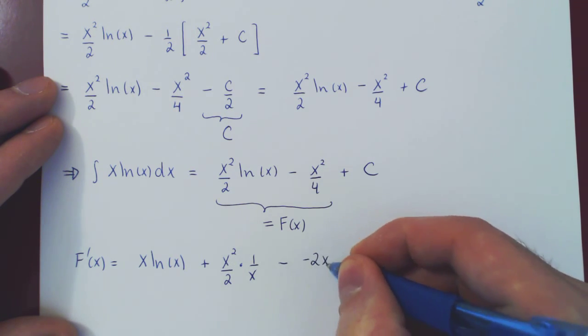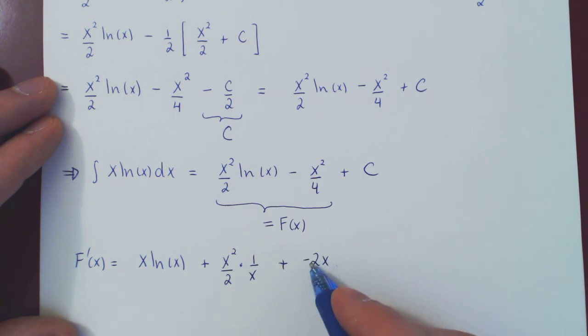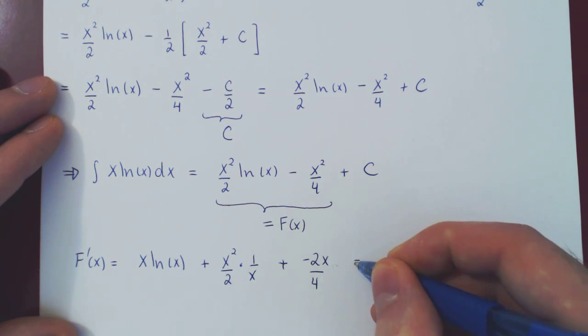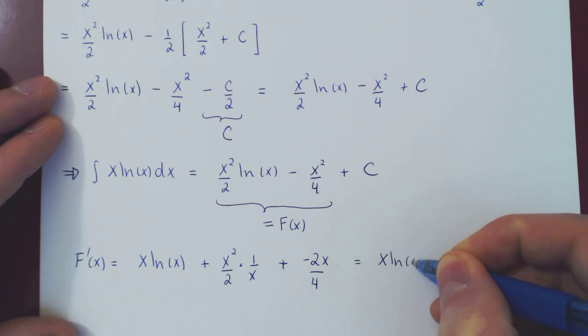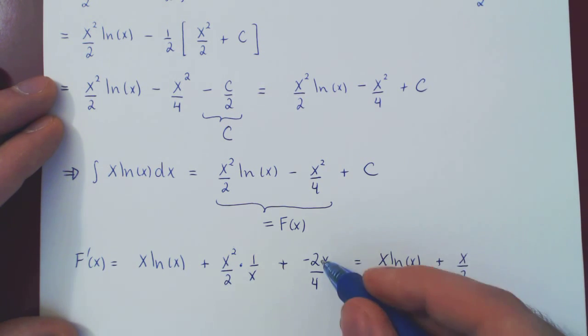And let's see if, in the end, we're left with x ln of x. So we have x ln of x. If we simplify, what do we have here? x squared over x is just x, so we have an x over 2. Of course, 2 over 4 is 1 half, minus x over 2.